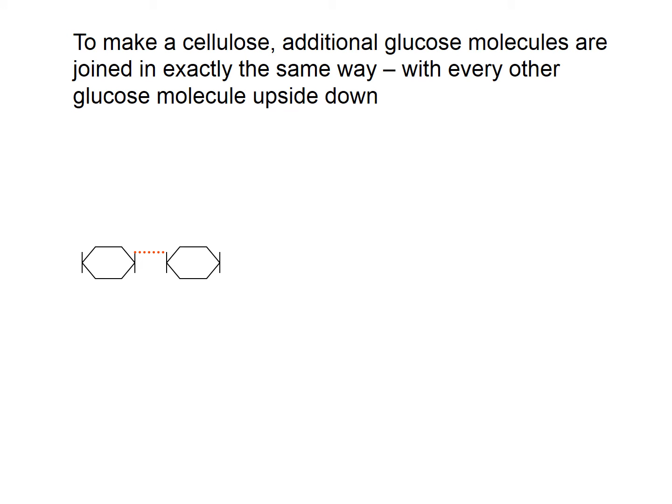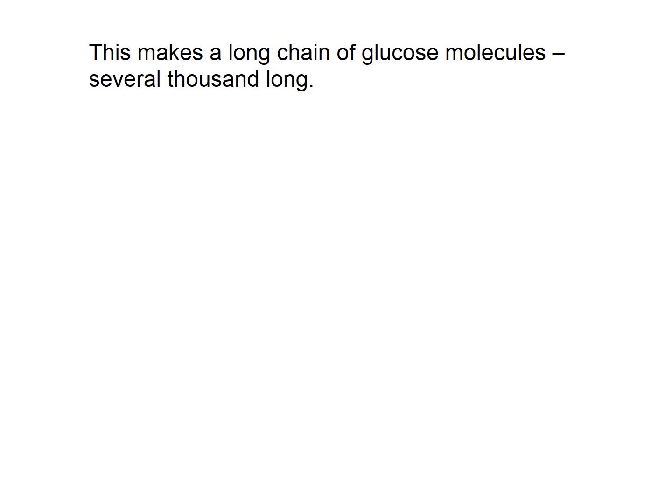So the next glucose molecule would be the right way up, the next one would be upside down. You can see the staggered glycosidic bonds. This in effect stops the monosaccharide chain from coiling up, particularly since it is thousands of glucose molecules long. So it doesn't coil up like you see in amylose, but instead it forms a linear chain.